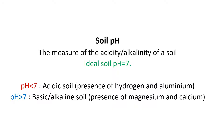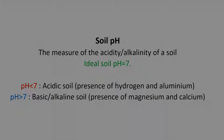A soil sample with pH below 7 is considered acidic soil and is usually due to the presence of hydrogen and aluminum. Basic or alkaline soil has a pH above 7. Such soils usually contain magnesium and calcium.